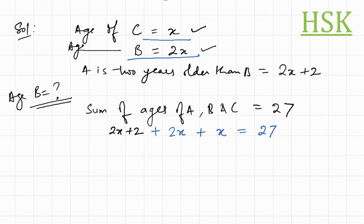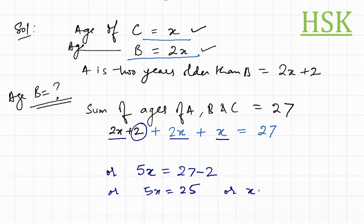Now, on totaling, I am going to get this 2X, 2X, 2X and X as equal to 5X. 5X is equal to 27 minus 2, or 5X is equal to 25, or X is equal to 25 upon 5, that is equal to 5.